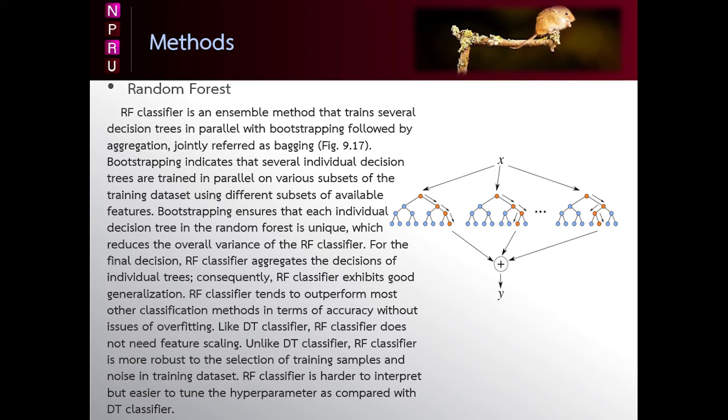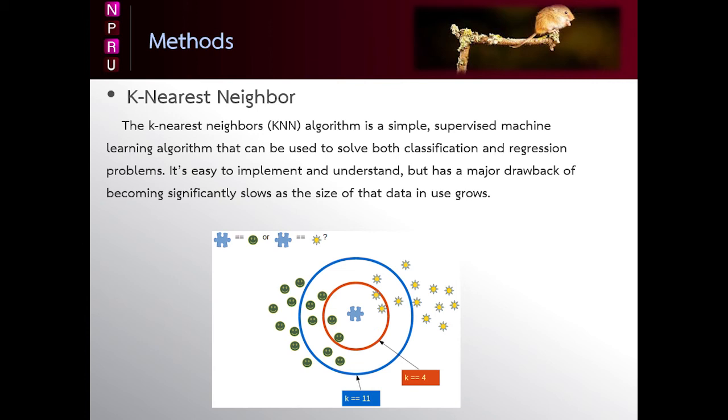And the last technique is KNN. The K-Nearest Neighbor algorithm is a simple supervised machine learning algorithm that can be used to solve both classification and regression problems. It's easy to implement and understand but has a major drawback of becoming significantly slow as the size of the data in use grows.